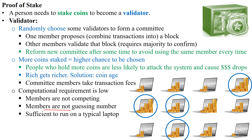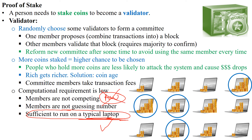It is sufficient to run a proof of stake network using a typical laptop or even a smartphone. In proof of work, a laptop or smartphone wouldn't earn anything because they lack the computational power to compete. In proof of stake, you can use your laptop to verify blocks and still do other tasks like playing games at the same time. Also, in proof of stake we don't use the word 'mine' — we use the word 'forge' or 'mint'.